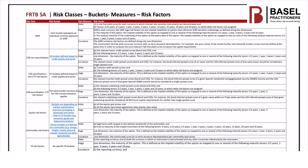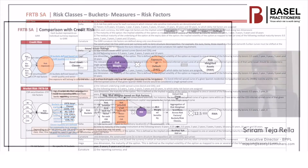If you look at equity, risk buckets are based on market capitalization, economy — emerging or advanced — and the sector. The next column is risk measures like delta, vega, and curvature, which I have just explained. The last column has the regulatory risk factors. In GIRR, the risk factors have been defined based on two factors: a risk-free yield curve for each currency, and 10 tenors. I hope this gives you some idea about risk classes, risk buckets, risk measures, and risk factors.